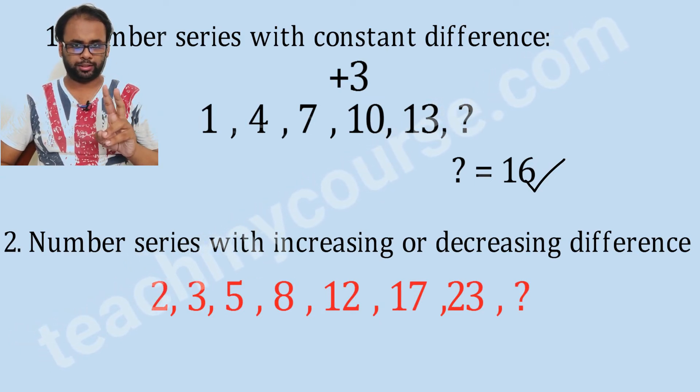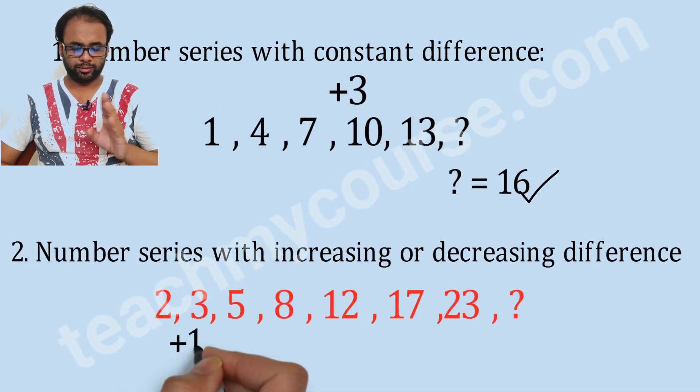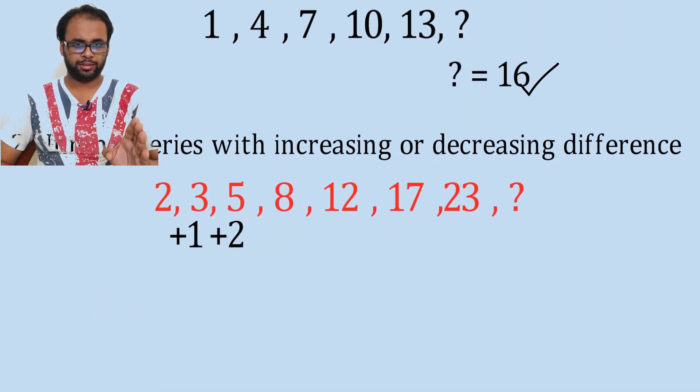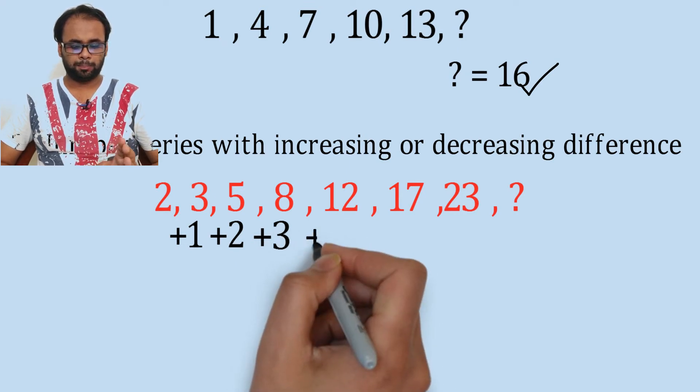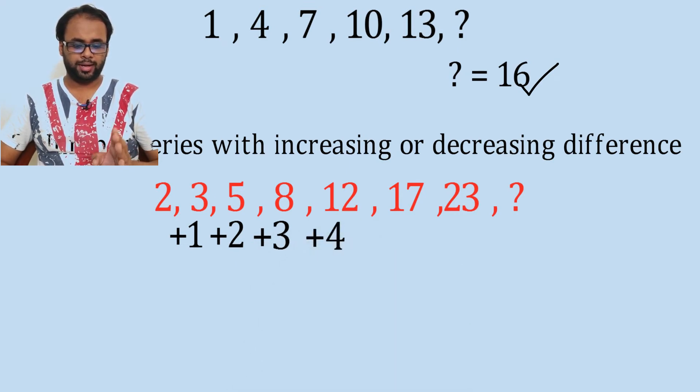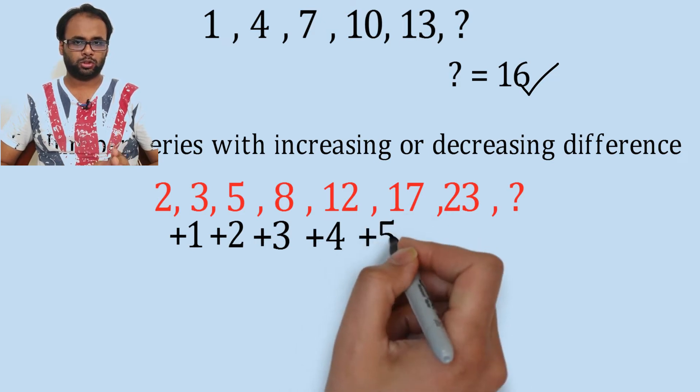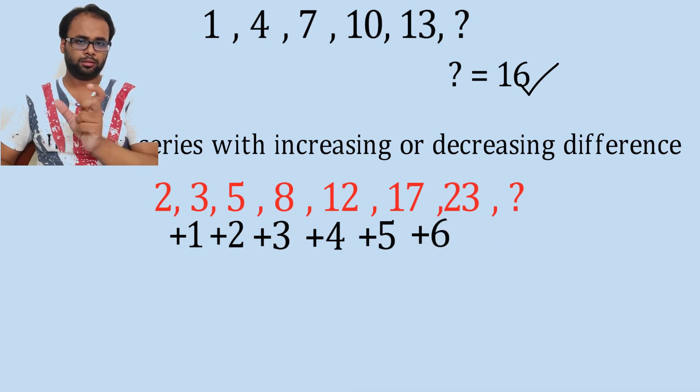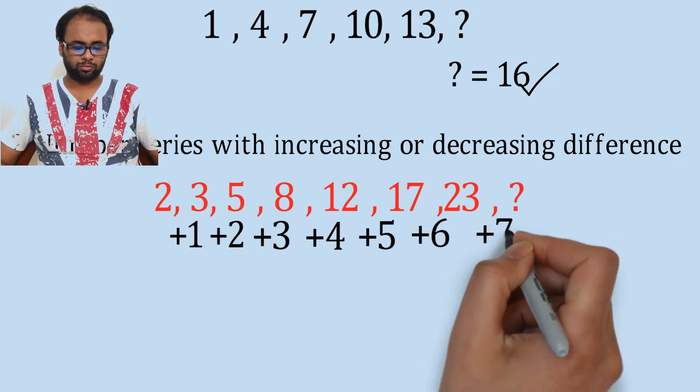Next, what is the difference between 3 and 5? It is 2. Next what is the difference? It is plus 3, next plus 4, next plus 5, next plus 6. So clearly we are increasing the difference with every two numbers.